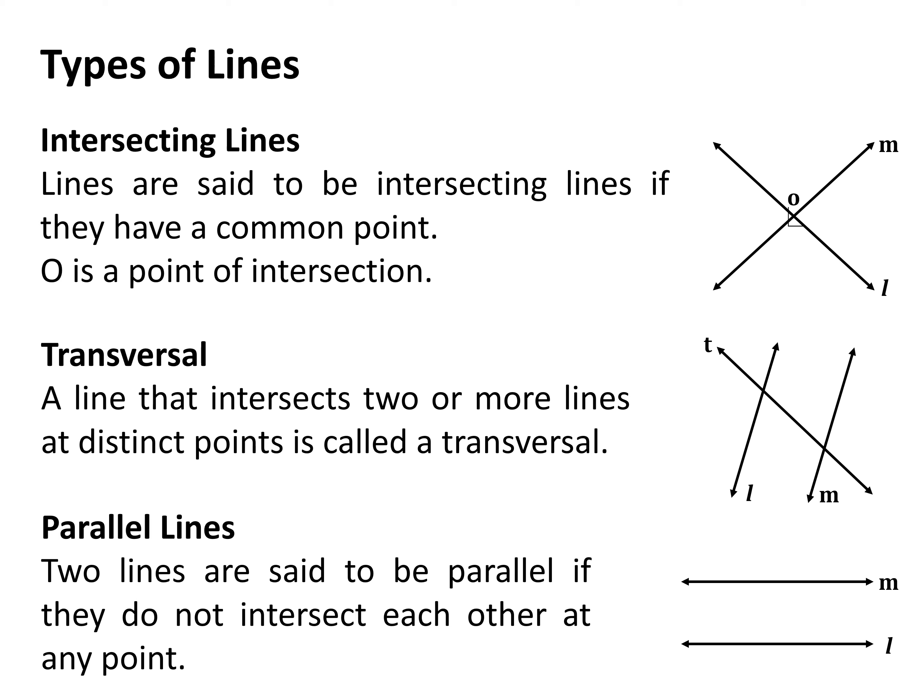The next one is transversal. A line that intersects two or more lines at distinct points is called a transversal. In the given figure, line L and line M are two lines, and line T is intersecting line L and M at two distinct points, so line T is a transversal of line L and line M. The last one is parallel lines — two lines are said to be parallel if they do not intersect each other at any point. Please remember that the distance between the parallel lines will always remain the same.